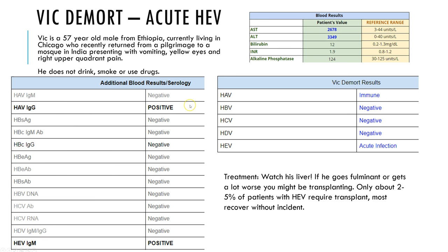He's HAV IgG positive, which gives two options: he's either immune from vaccination, or was exposed at some point in the past and resolved it. Either way, he's immune now — we're not worried about HAV. However, he has HEV IgM, which tells us an acute HEV infection is occurring right now. Management: watch his liver. If he goes fulminant, you might consider transplant, but only about two to five percent of HEV patients actually require transplant. After recovery, consider immunizing him against hepatitis B, as he's not currently protected against that.